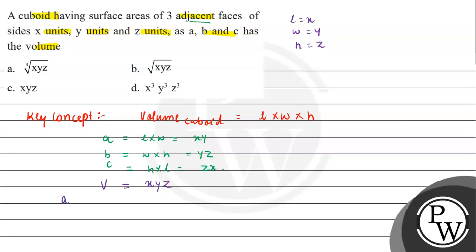So for this case, if we find out A multiplied by B multiplied by C, this will be equal to XY multiplied by YZ multiplied by ZX, which equals X squared Y squared Z squared. And X multiplied by Y multiplied by Z is the volume, so this is V squared.